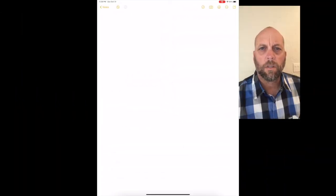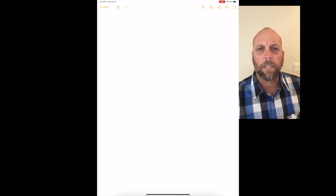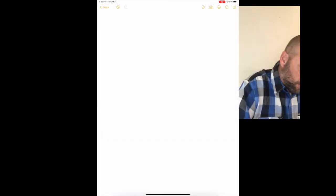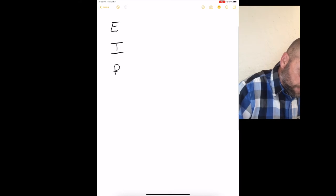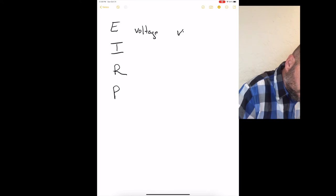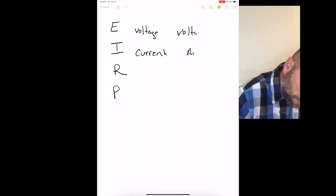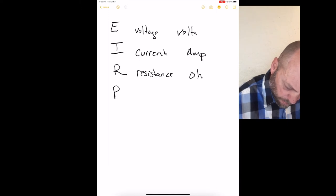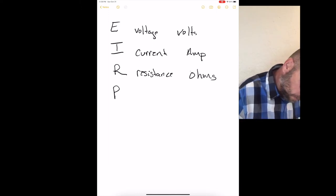Alright guys, to know these formulas and to work these formulas, first we need to know what they're asking. So you're gonna have to know E, I, R, and P. E which is voltage or volts. I which is current, amperage. R which is resistance or ohms. And last is wattage, which is watts.